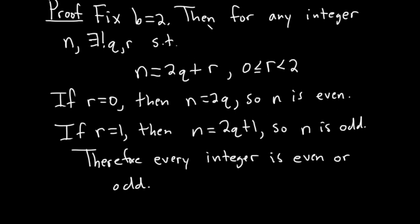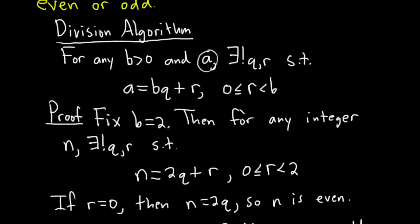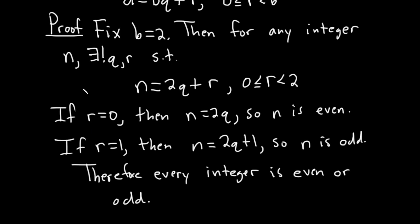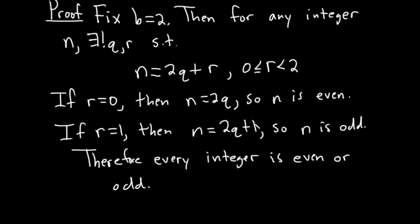but the division algorithm shows that when you divide by 2, those are the only two possible remainders, 0 and 1. And so you can apply the division algorithm to write every integer in this way.